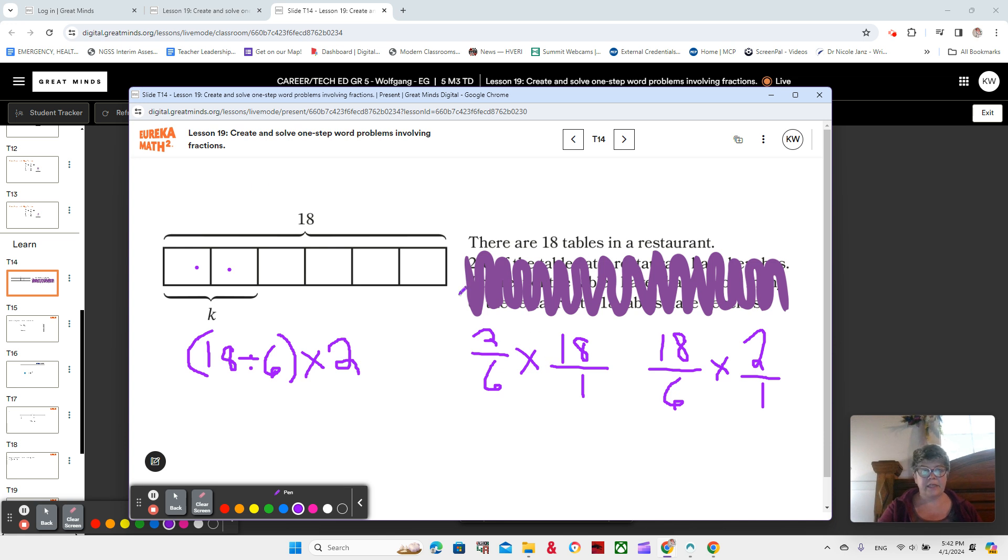We could say that 2 sixths of the tables are round. Or we could say that there are 6 servers, 6 people who are working at the restaurant, and they all wait on the same number of tables. How many tables would 2 of them work on together? That's kind of interesting.